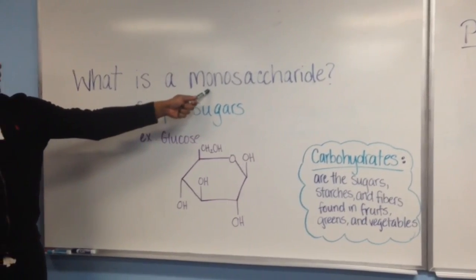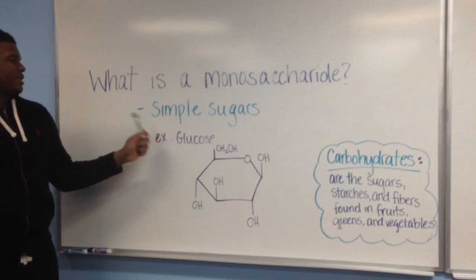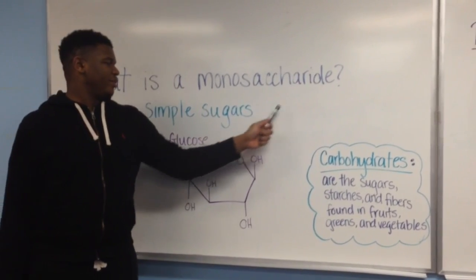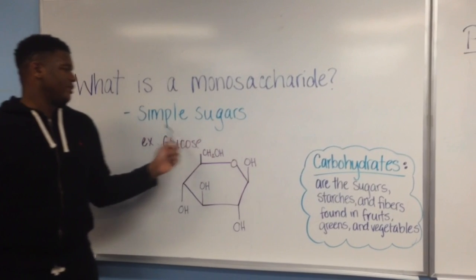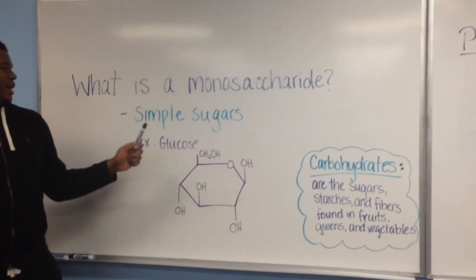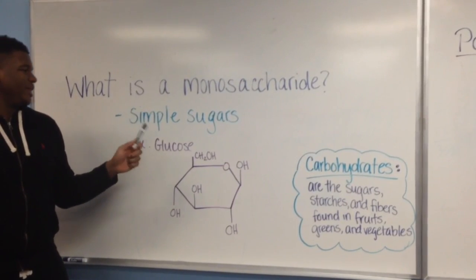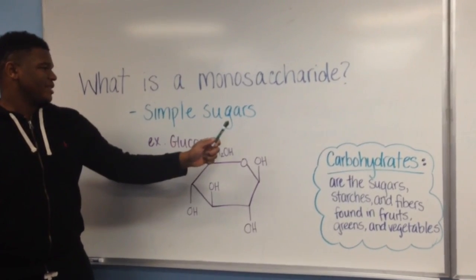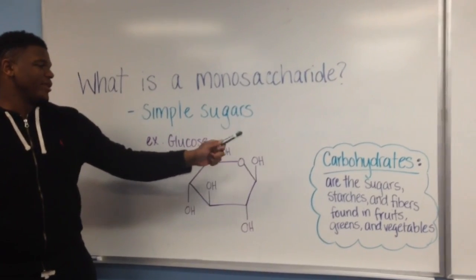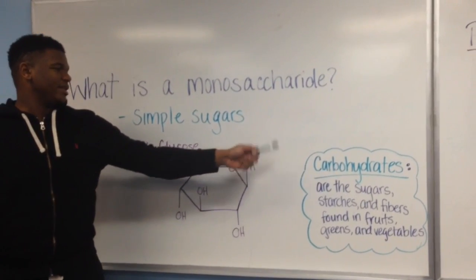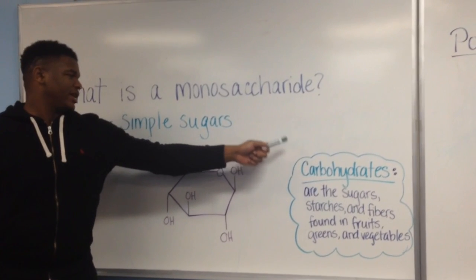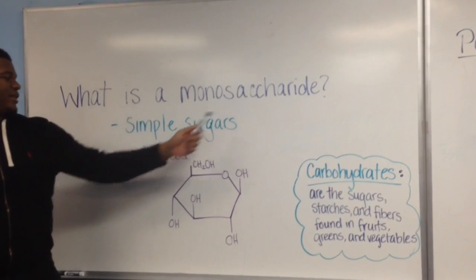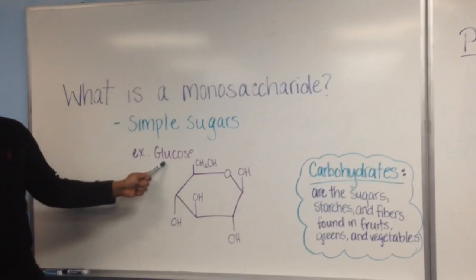A monosaccharide is a simple sugar that cannot be broken down by the means of hydrolysis. It is also one of the many carbohydrates that can't be broken down into a simpler form. One form of monosaccharide is glucose.